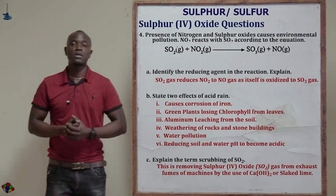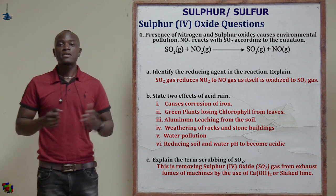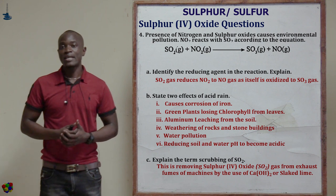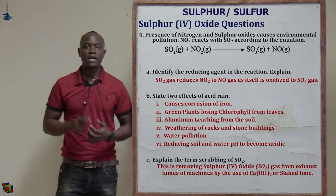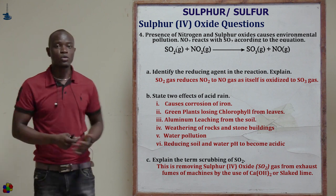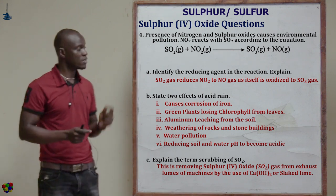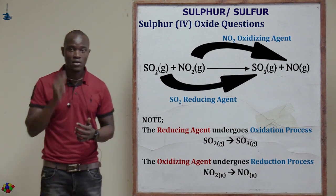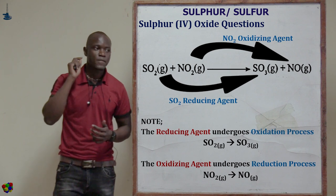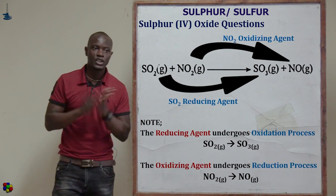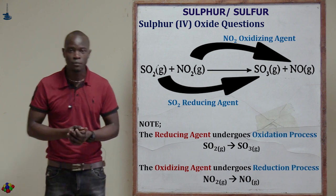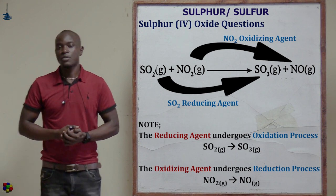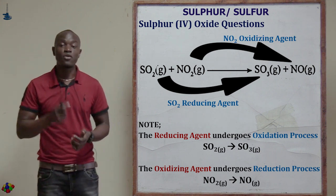Question four asks: the presence of nitrogen and sulfur oxide causes environmental pollution. Nitrogen dioxide reacts with sulfur oxide according to the equation below, giving sulfur 6 oxide and nitrogen 2 oxide (NO). The first part asks to identify the reducing agent in this reaction. The reducing agent is sulfur 4 oxide, which reduces nitrogen 4 oxide to nitrogen 2 oxide, while itself being oxidized to sulfur 6 oxide.